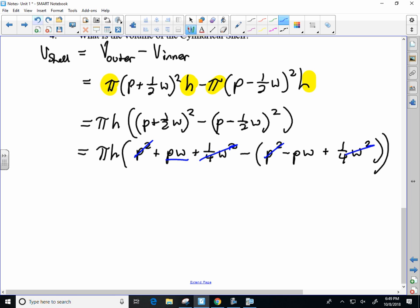Because of this minus sign, this would combine with that, so we're looking at πH, and then it would be multiplied by 2PW.